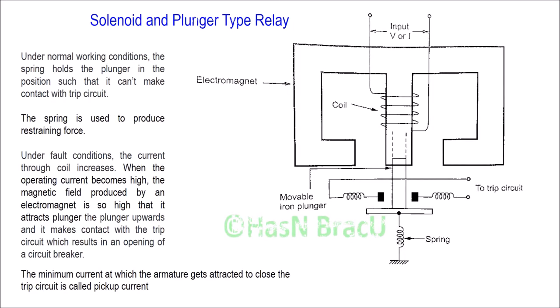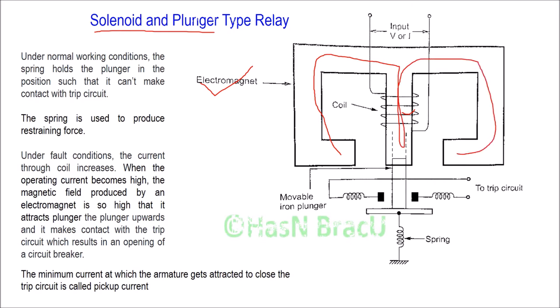In this video we will discuss solenoid and plunger type electromagnetic attraction relay. In solenoid and plunger type relay, you can see the construction — there is an electromagnet consisting of a solenoid, or coil of wire, which is wrapped around an iron core. The solenoid is hollow, and the plunger can be moved upwards through this hollow solenoid in order to activate the trip circuit.